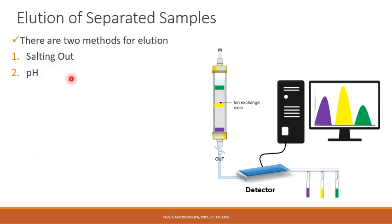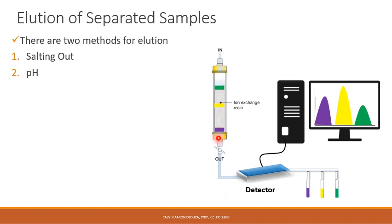Now that we have learned about the working of the ion exchange chromatography technique, we need to know what the elution technique is. Here, we have three different separated bands or separated protein samples found. The protein at the topmost part would be highly negatively charged, the intermediate band would be intermediate, and the bottom would be the positively charged protein sample. Since these are separated, we cannot just open the clamp and allow them to leave — there have to be sophisticated ways to elute them. The topmost part will not come out easily, so different methods are used.